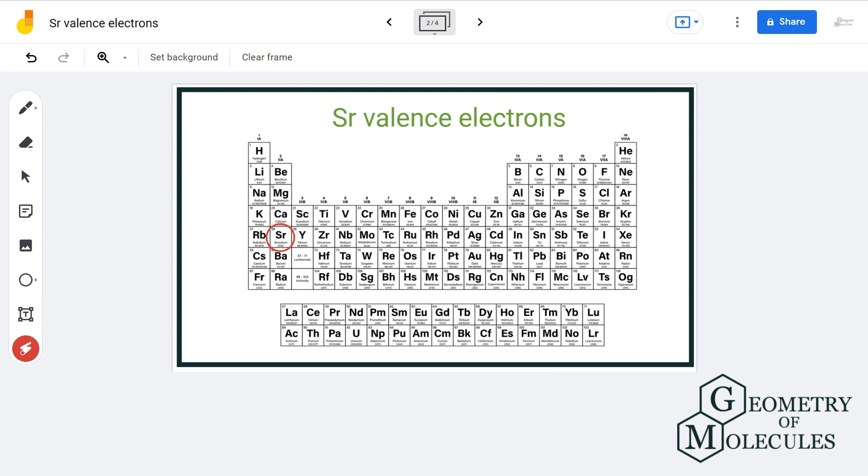Then we will look at the group it is located in. When we go down a group, the number of valence electrons remains the same even after there is an increase in number of shells. So every atom in the same group has the same number of valence electrons. Here strontium is present in group 2a, so all the elements will have two electrons in their valence shell.